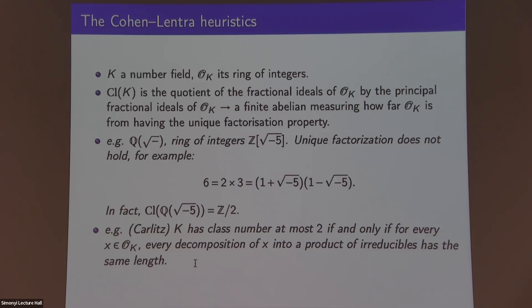The Cohen-Lenstra heuristics: first I'll introduce the objects this heuristics deals with. You start with a number field K — an extension of Q, like the Gaussian numbers Q adjoined i. You let O_K be its ring of integers. You define an invariant called the class group — the quotient of the fractional ideals of O_K by the principal fractional ideals. It's a finite abelian group that measures how far O_K is from having the unique factorization property.